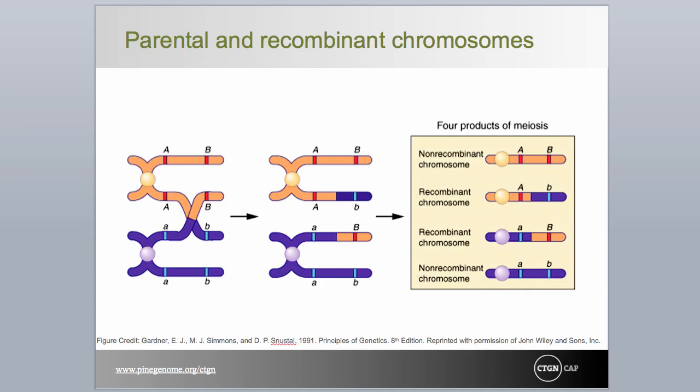If these were the only markers available, we would have no idea how large the crossover section actually was. All we would know is that the event occurred somewhere between the two markers. The more markers available, the better we could define genetic proximity between them.